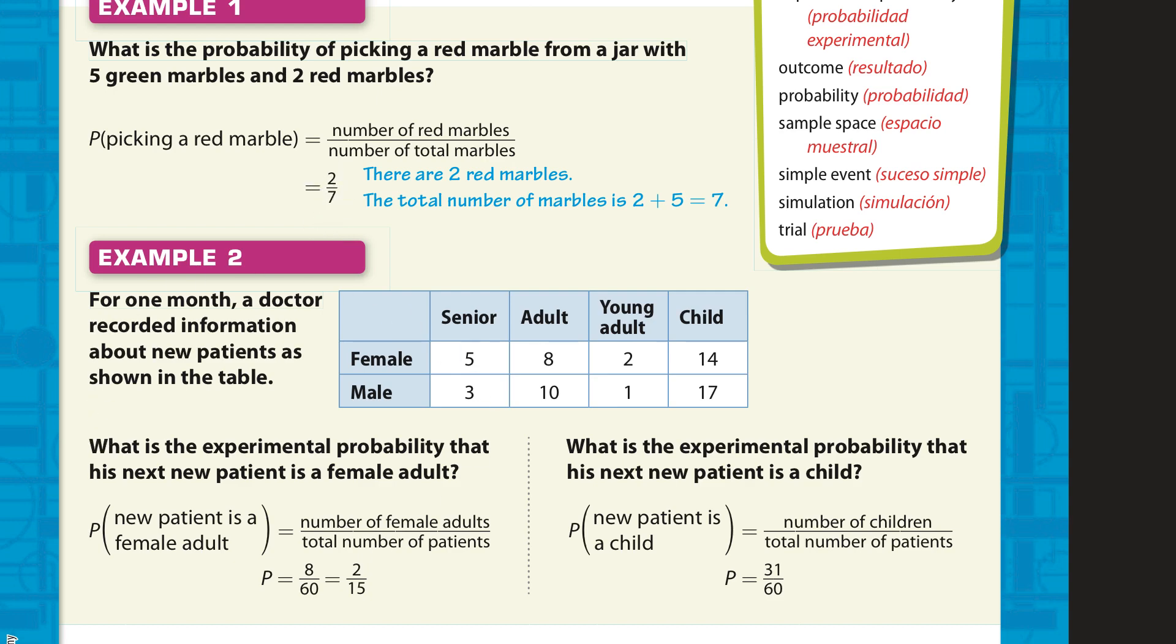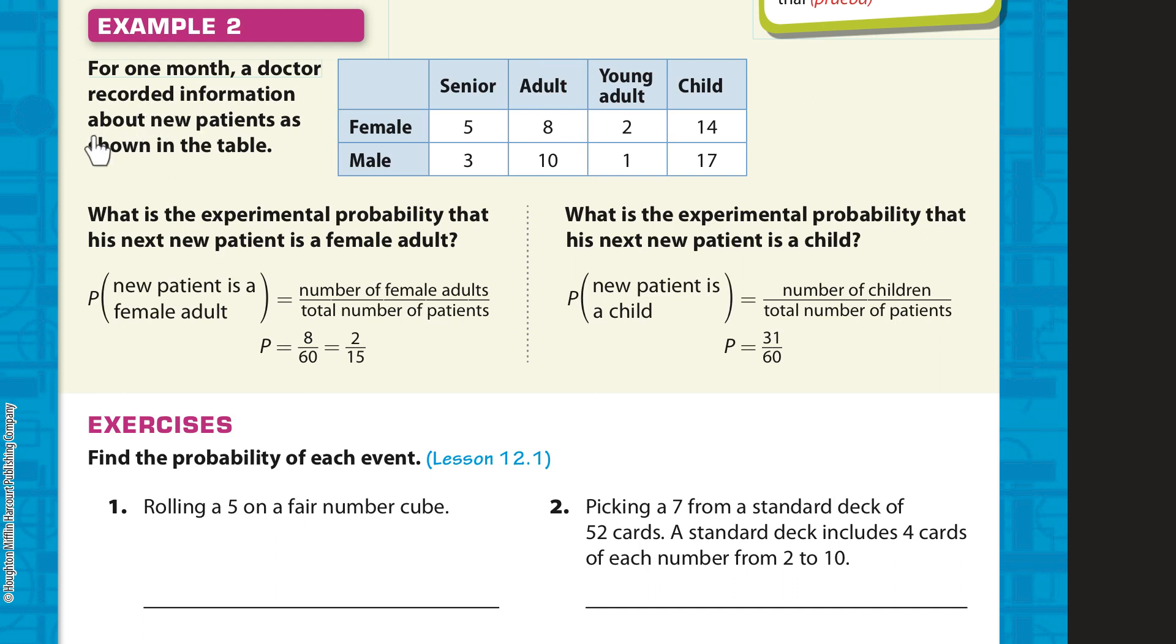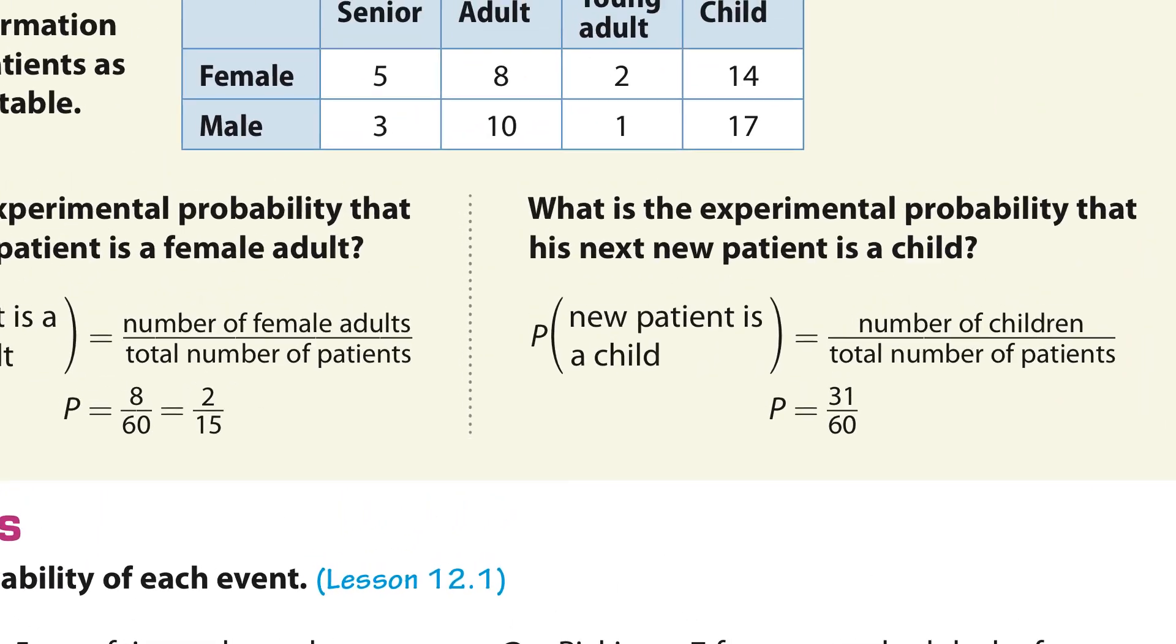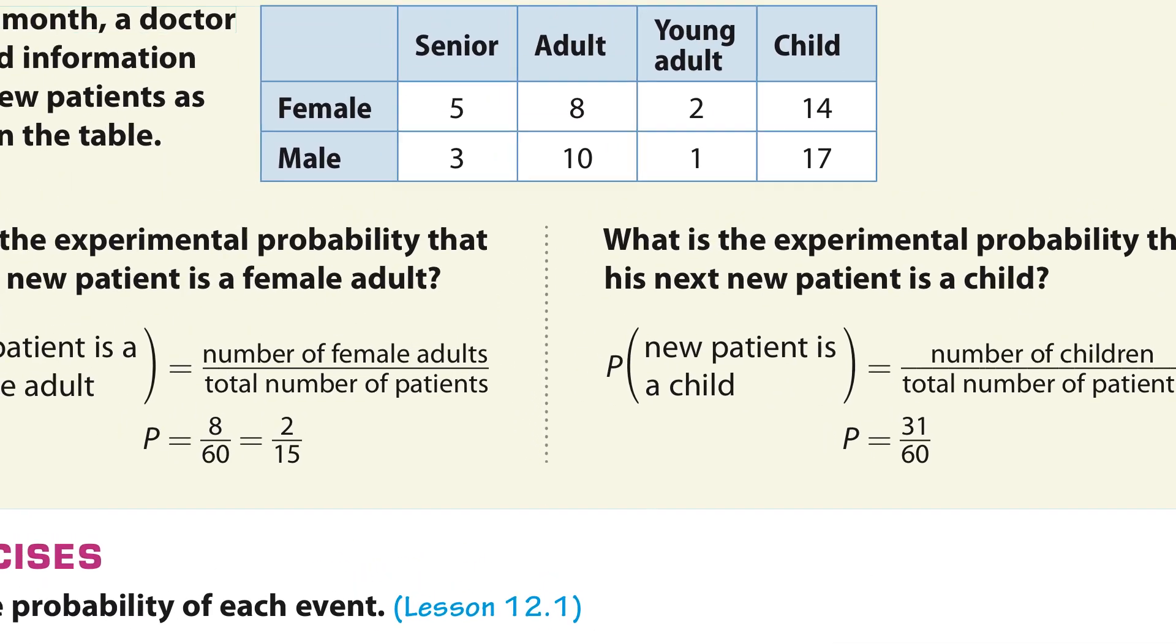Our second example here is, for one month, the doctor recorded information about new patients as shown in the table. Senior adult, young adult, and child. So, what's the probability that a new patient is a female adult? So, a female adult is 8 out of a total of 60 patients. So, 8 out of 60 simplifies to 2 out of 15. Or a new patient is a child. So, you can add up both of these. 14 and 17 is 31 out of the same 60 patients that we have all together.